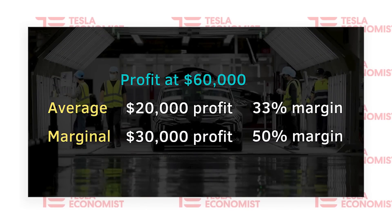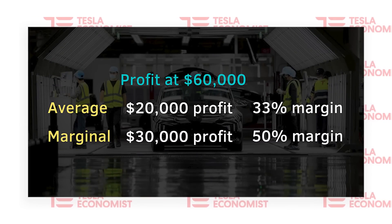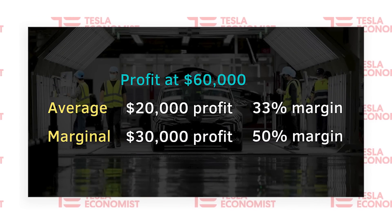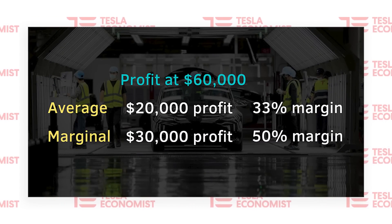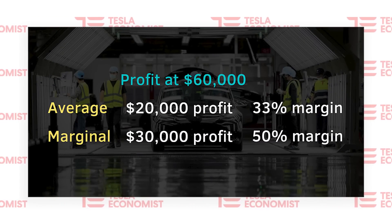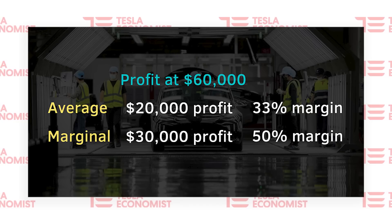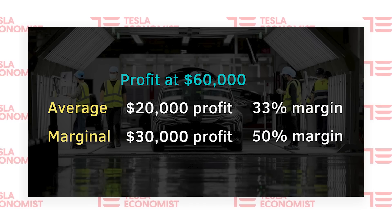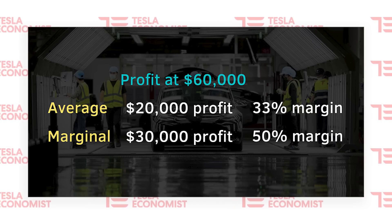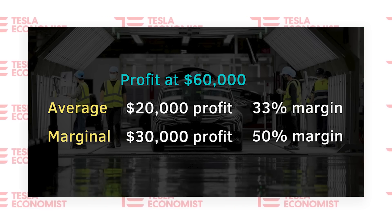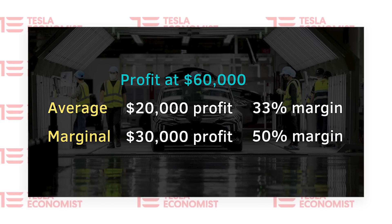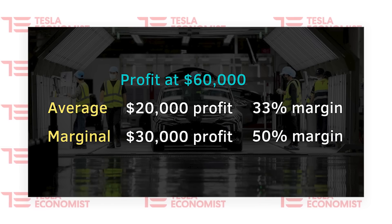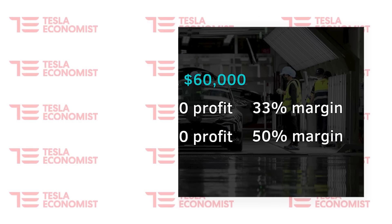If Tesla sold this Model Y for $60,000, then Tesla would average 33% gross margin per vehicle. However, when Tesla increased the run rate, then any additional units will carry a much higher profit. Now of course I don't know these exact numbers, but I would say we are close.